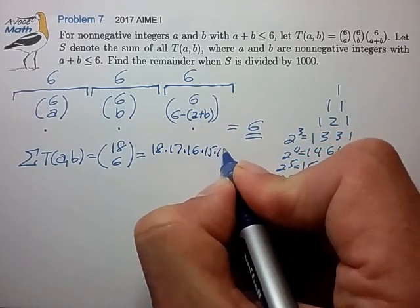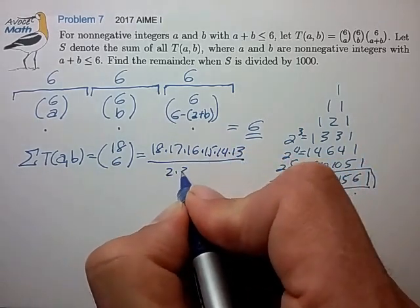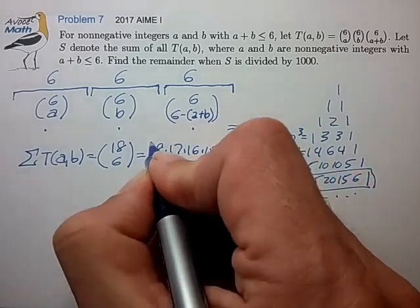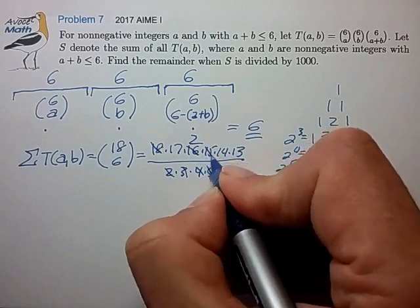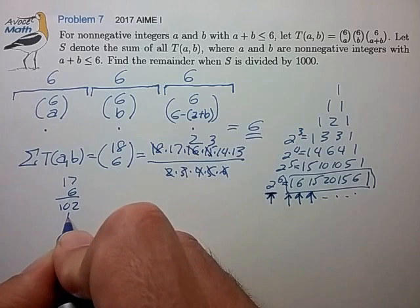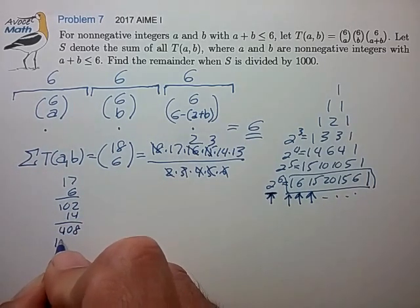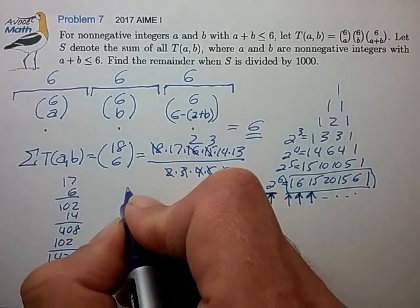18 times 17 times 16 times 15 times 14 over 2 times 3, 4. Okay, so we can cancel some terms here. Get you to 2. 5 gets you to 3. So we just have to calculate 17 times 6. Multiply that by 14. What's that? 408, 102, 14, 28.